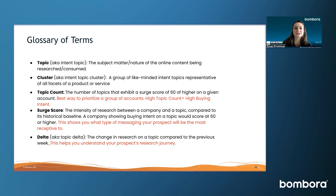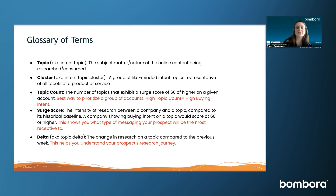When I refer to topic clusters, I'm talking about groups of like-minded topics together. Topic count is the number of topics that exhibit a surge score of 60 or higher. The surge score is essentially the intensity of research that a company is doing — when a company hits a score of 60, there is an increase in research and they're now showing buying intent. The higher the topic count, the higher the buying intent. Delta shows the variance in research a company is doing this week compared to the previous week.